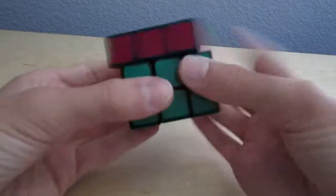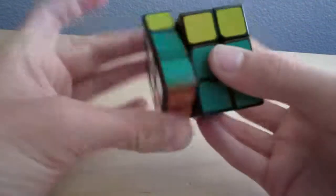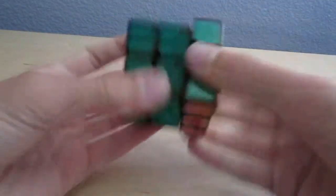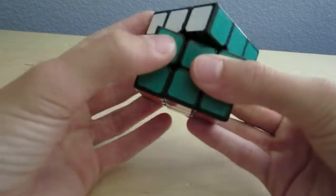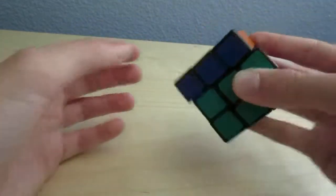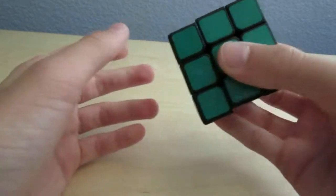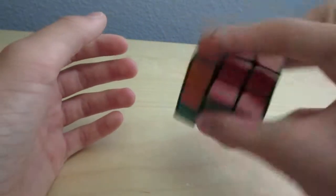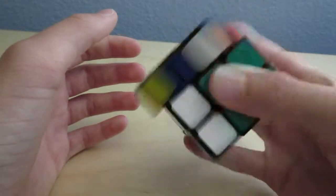And the cube I use for one-handed is a 50mm Zhanchi. Now this cube is really good. It corner cuts and this is just the right size for one-handed. Like the 52mm was just too small.